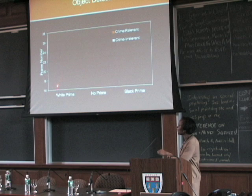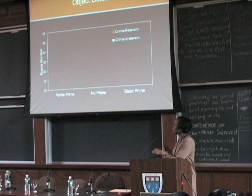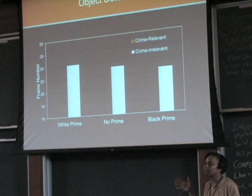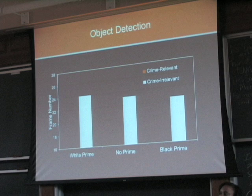So here are the results. Along the vertical axis we have the frame number in the continuum at which they could recognize what that object was — that goes from frame one where it's degraded to frame 41 where it's completely clear. The first thing we'll notice is that for the crime-irrelevant objects it makes no difference whether they're exposed to the black faces, the white faces, or no faces beforehand. They're recognizing those crime-irrelevant objects at about the same point in the continuum.